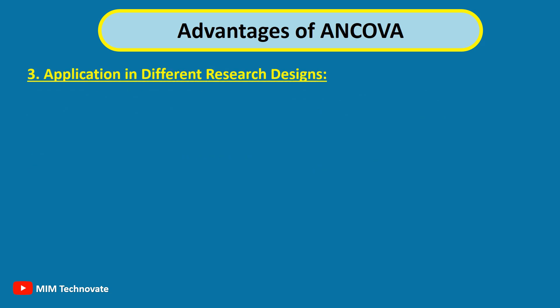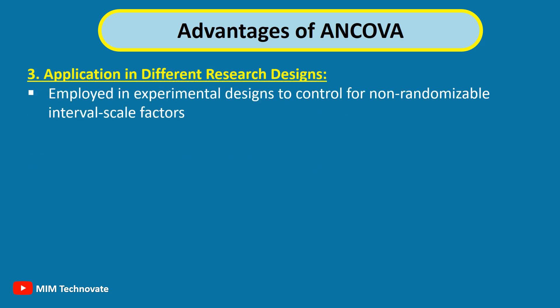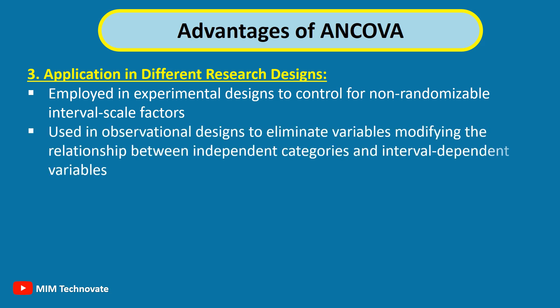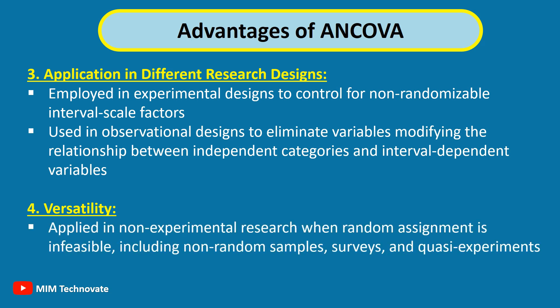Application in different research designs: ANCOVA can be employed in experimental designs to control for non-randomizable interval scale factors. It can also be used in observational designs to eliminate variables modifying the relationship between independent categories and interval-dependent variables. Additionally, ANCOVA can be applied in non-experimental research when random assignment is infeasible, including non-random samples, surveys, and quasi-experiments.